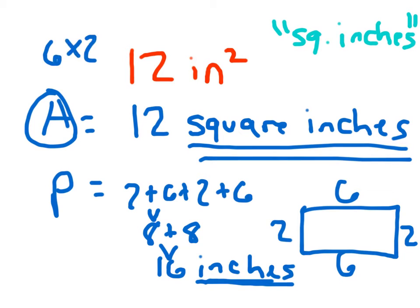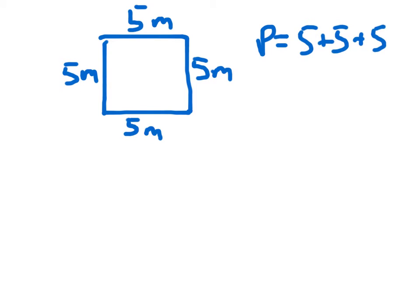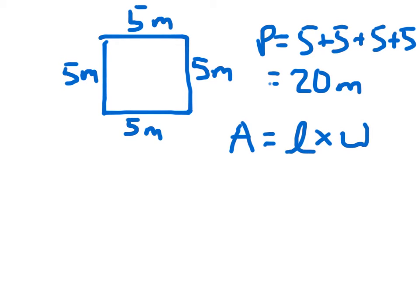What students get confused on is the actual label, and the label is one of the most important things when you are trying to figure out area. Area is equal to 12 square inches, so use that formula correctly. You must show your work also when you are figuring out that area. So this here is a square where each side is a length of 5 meters. The perimeter is 5 plus 5 plus 5 plus 5, which equals 20 meters. The formula for the area is equal to length times width. The length is 5 meters, the width is 5 meters. Area is equal to 5 meters times 5 meters.